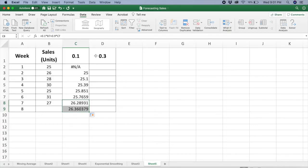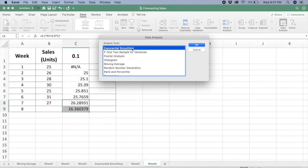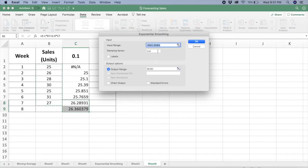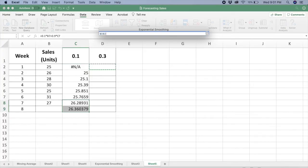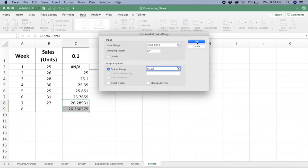Now let's say if we want the alpha to be 0.3, we can do that. Go back to your Data Analysis, go back to Exponential Smoothing. Now the damping factor here will not be 0.9. It will be 1 minus 0.3, which is 0.7. Select your output range here and click OK.